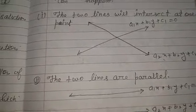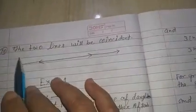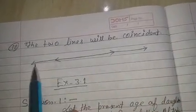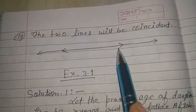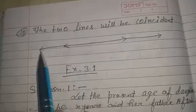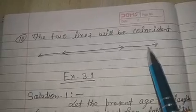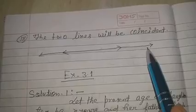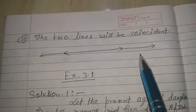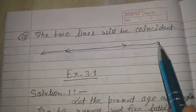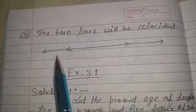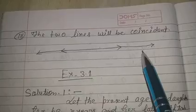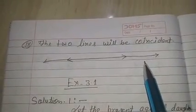Third case: the two lines will be coincident। यानी दोनों lines एक दूसरे पर coincide कर जाती हैं। यहाँ देखिए — एक line है जो first equation को represent करती है और दूसरी बड़ी line second equation को represent करती है, और ये दोनों lines एक दूसरे को coincide कर रही हैं। इस case में infinitely many solutions होते हैं, क्योंकि सभी points दोनों lines को — और दोनों equations को — satisfied करते हैं। तो इस case में coincident lines मिलती हैं और infinitely many solutions मिलते हैं।